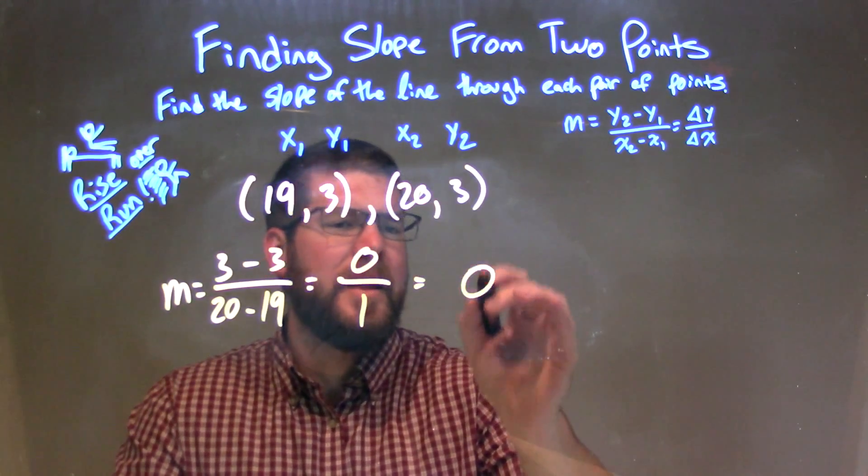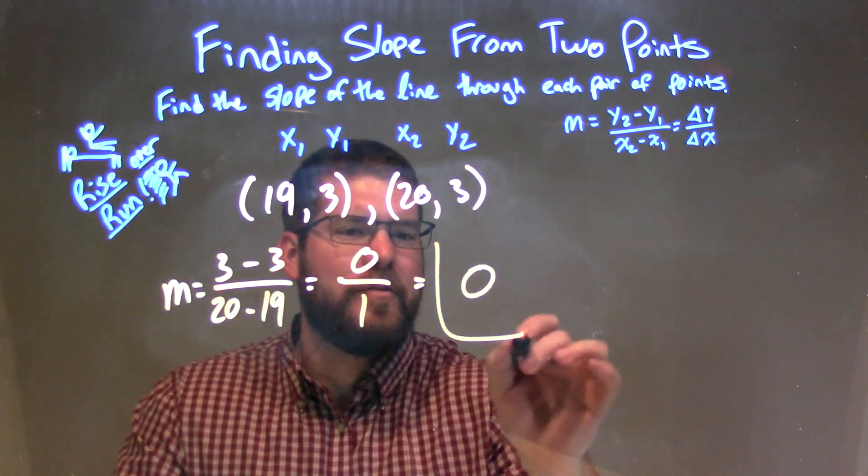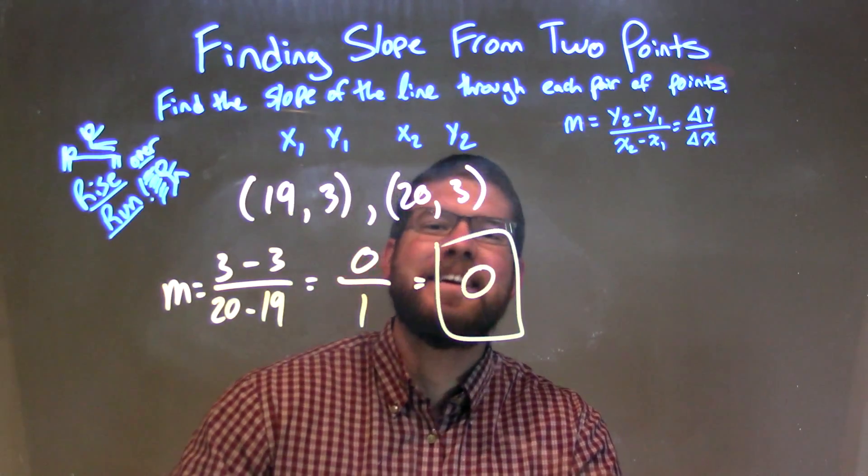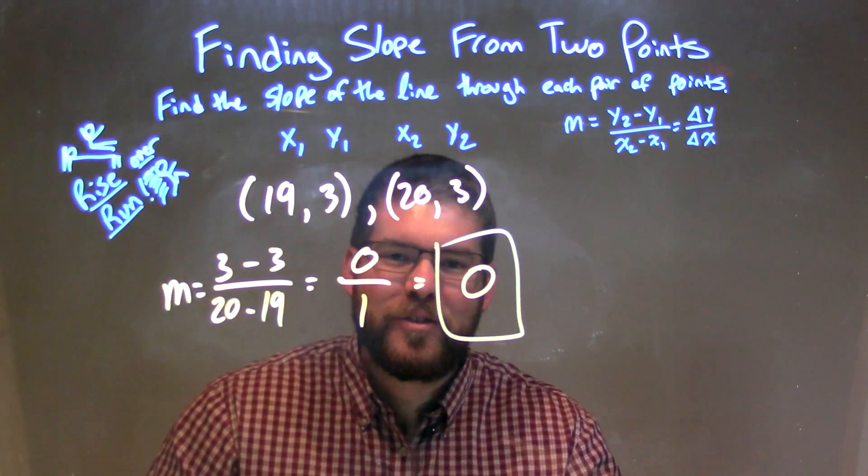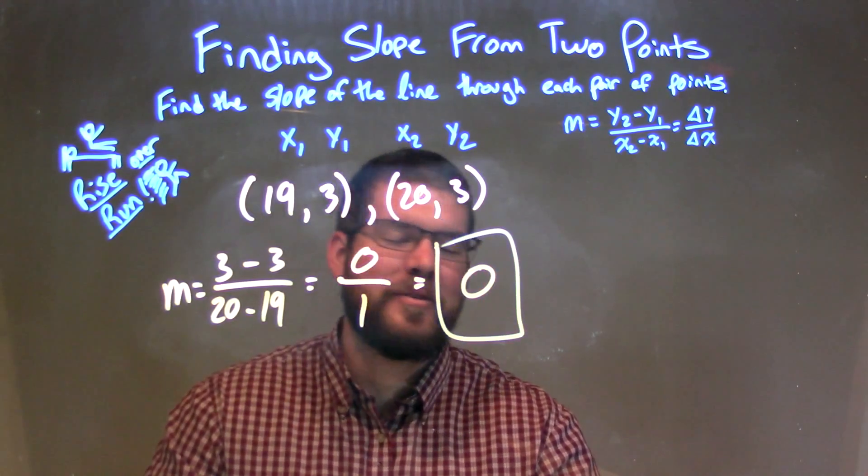We've got 0 divided by 1 is 0. I'm not going to circle that answer, it's a bit confusing, so I'll put a box around it. Our final slope here is just 0 between these two points.